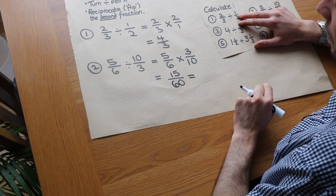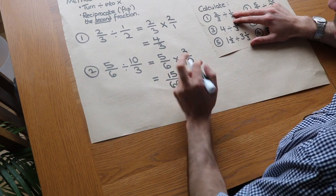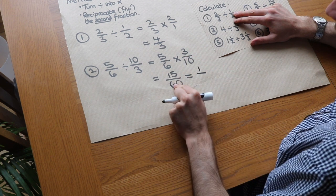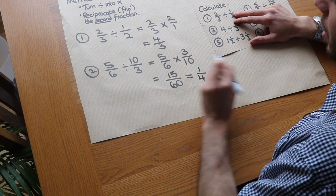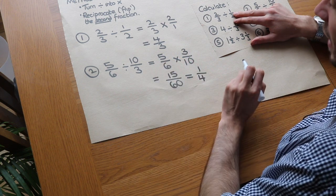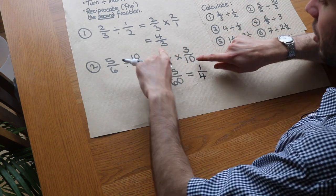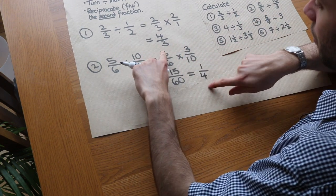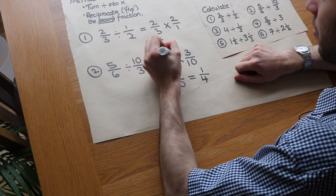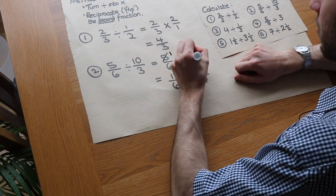We could simplify that fraction by dividing top and bottom by 15. So 15 divided by 15 is 1, and 60 divided by 15 is 4, giving us 1/4. You could have also done cross-cancelling if you remember—you can diagonally divide. The 5 and 10 you can divide both by 5, so replace the 5 by 1 and the 10 with 2.